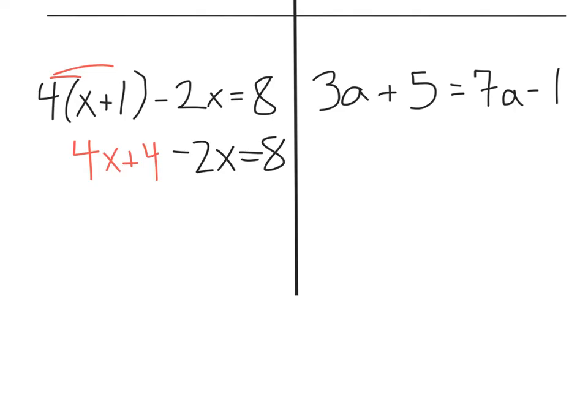Looks like we can also combine some like terms here. I have a 4x minus 2x I could combine. 4x minus 2x is 2x. I still have that plus 4 equals 8. Now, it looks pretty similar to the first one. I have my variable next to the 2. Why don't we go ahead and minus 4 both sides.